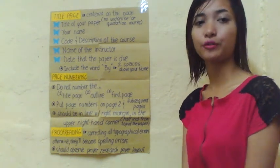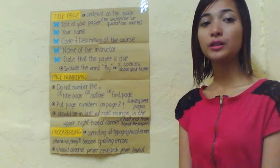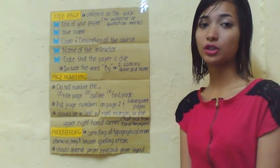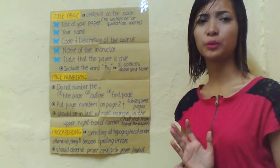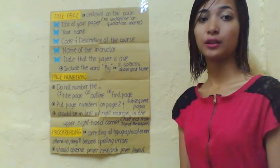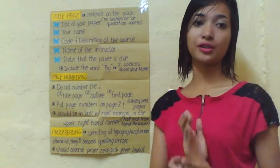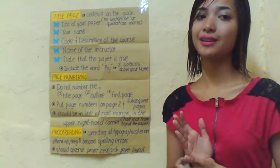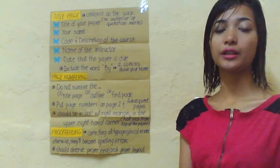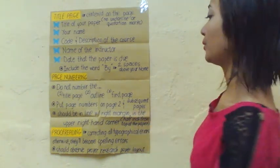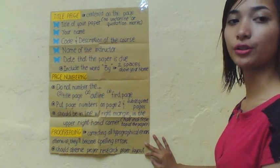Why is it very critical to have proofreading in research or thesis writing? It is important to have proofreading because we will know the grammatical errors in our research. Even if we are very informed on the topic, it is very important that the readers will fully understand what we are talking about. It is very important and significant to have someone check our research. Proofreading is the correcting of all typographical errors, otherwise they become spelling errors.